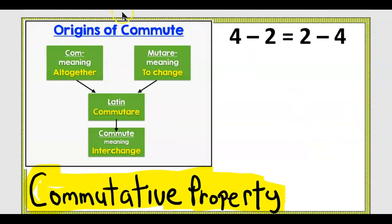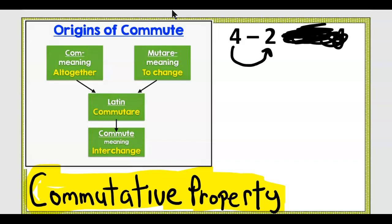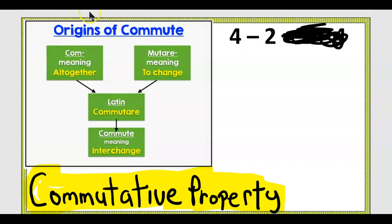Can we use the commutative property here? Just for a moment, let's look at four and two — can we switch their places? I digress. I tangent a lot in math, and tangent is about math.